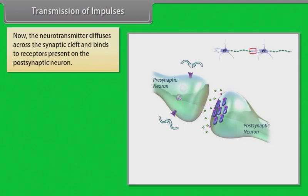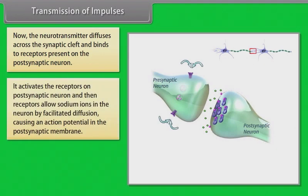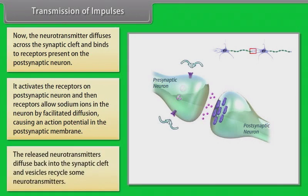The neurotransmitter diffuses across the synaptic cleft and binds to the receptors present on the post-synaptic neuron. It activates the receptors, allowing sodium ions into the neuron by facilitated diffusion and causing an action potential in the post-synaptic membrane. The released neurotransmitters diffuse back into the synaptic cleft and vesicles recycle some neurotransmitters.